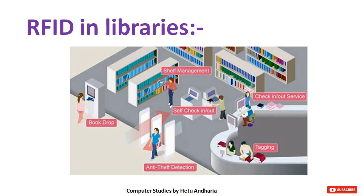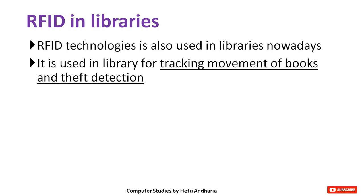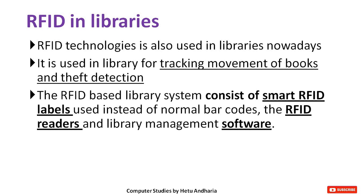RFID in the library: the tagging is done on books, and as soon as a person goes out with a book, self check-in and check-out is done automatically. When you return a book, you drop it into the book drop. It also provides anti-theft detection. RFID technology is used in libraries for tracking movements of books and theft detection. The RFID-based library system consists of smart RFID labels used instead of normal barcodes, an RFID reader, and library management software, allowing libraries to manage their day-to-day activities more effectively.